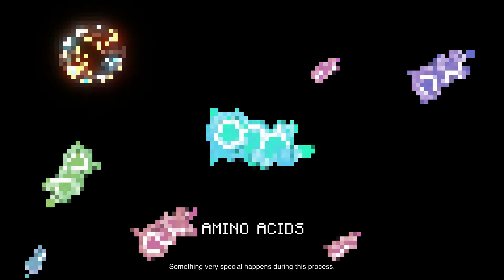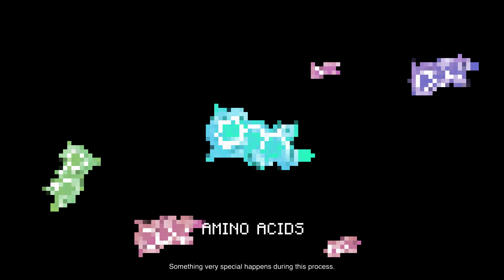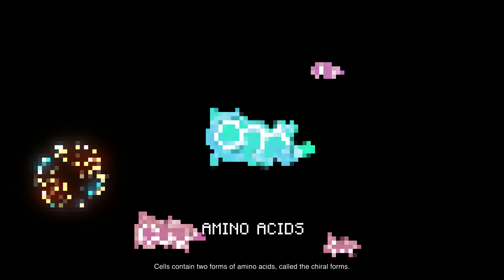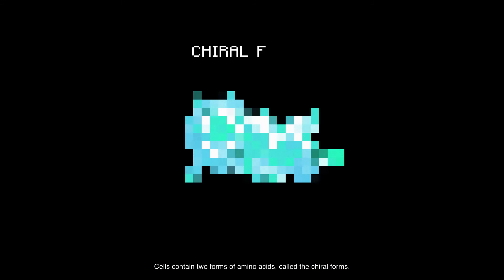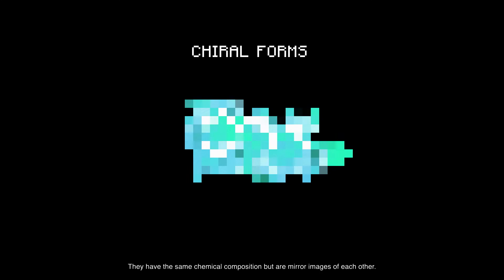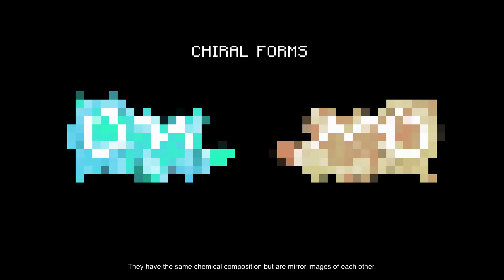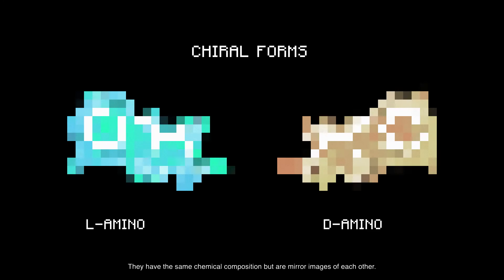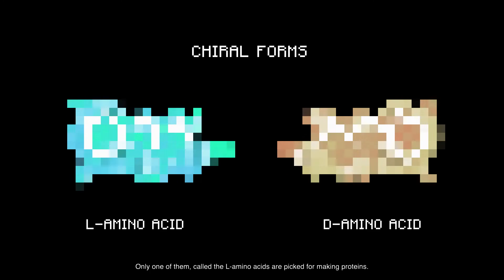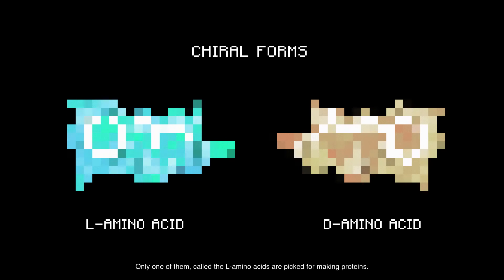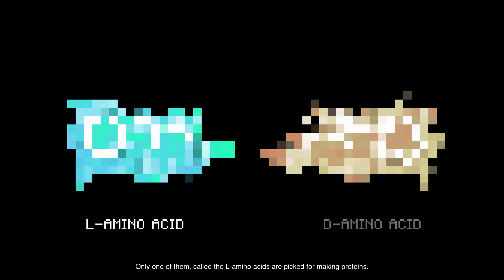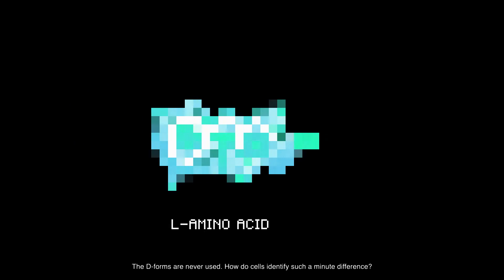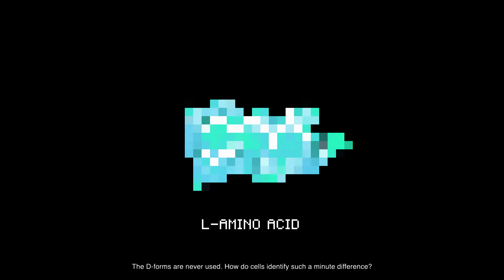Something very special happens during this process. Cells contain two forms of amino acids called the chiral forms. They have the same chemical composition but are mirror images of each other. Only one of them, called the L-amino acids, are picked for making proteins. The D-forms are never used.